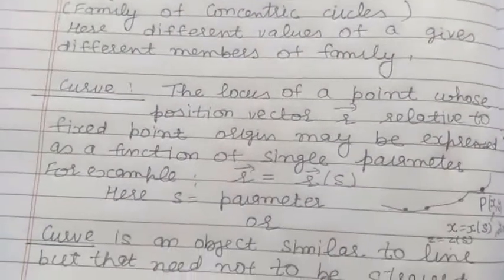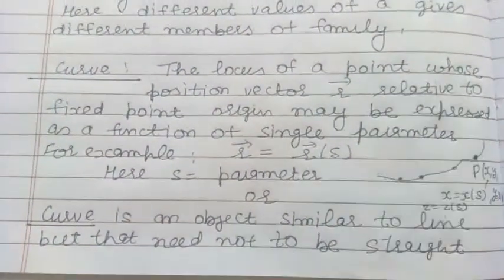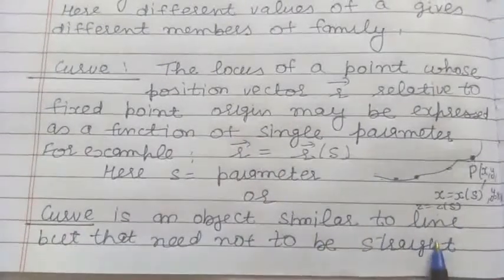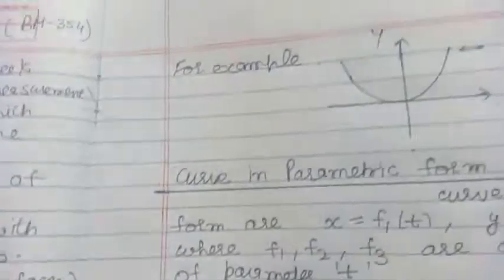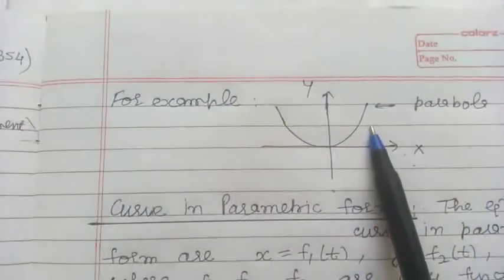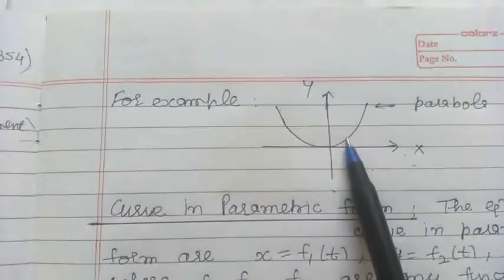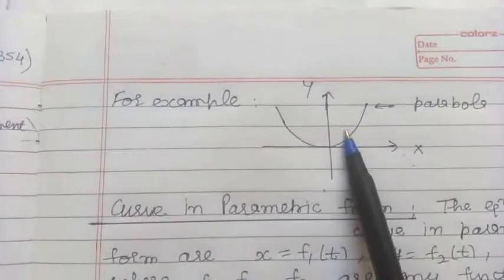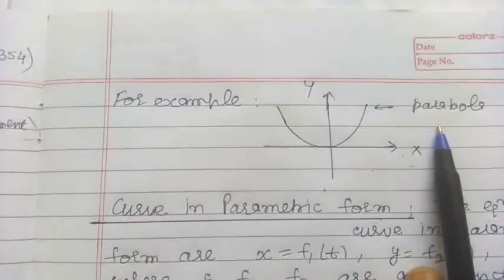Generally, we have another definition of a curve. A curve is an object which is similar to a line but need not be straight. For example, a parabola is a curve — it is similar to a line but is not a line. So a parabola is an example of a curve.